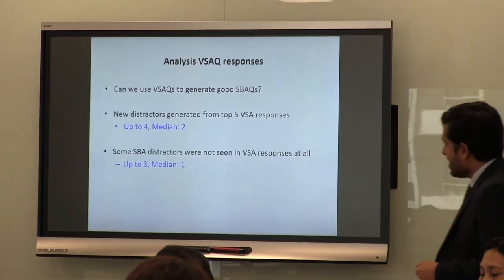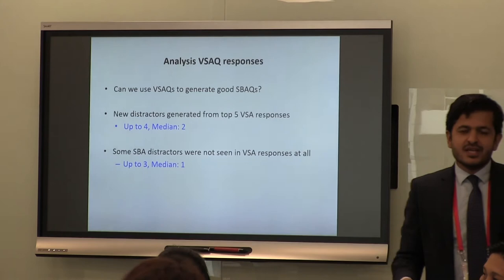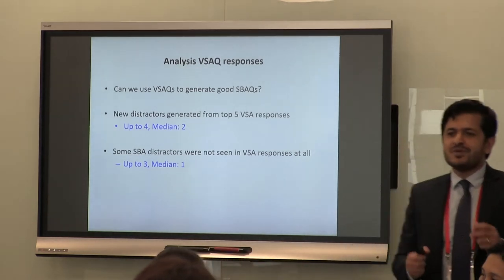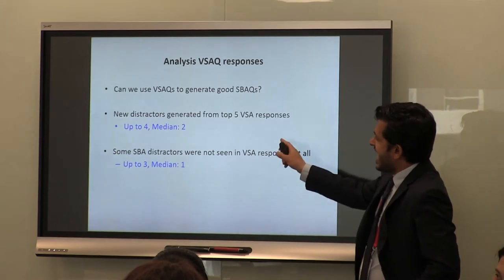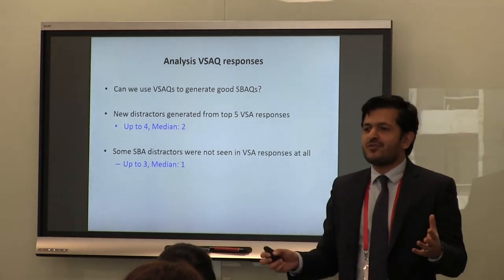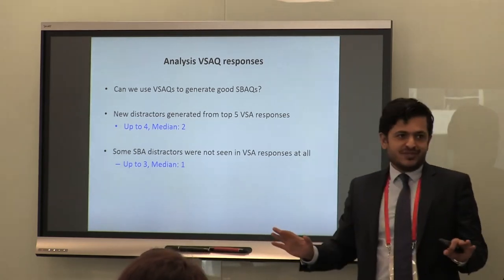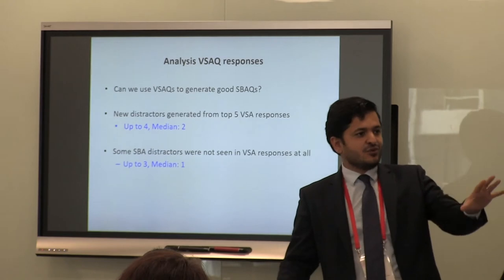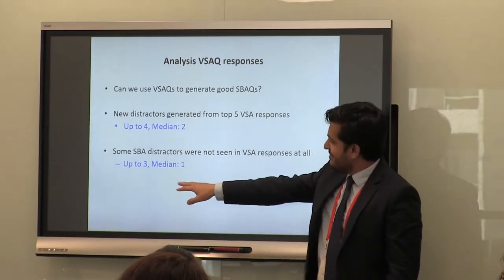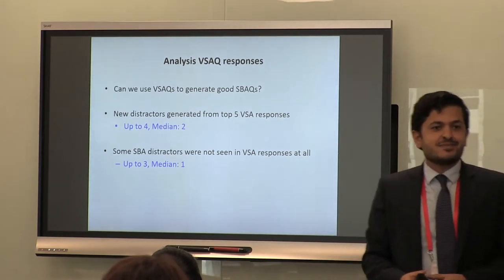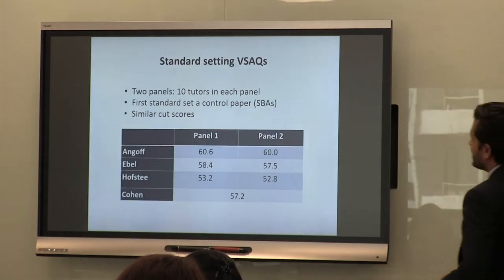An interesting additional finding: if you run questions as VSAs and see what people offer, you'll be amazed — you come up with distractors you didn't even think about. On average, students generated two distractors that weren't in the five options we thought people could give. Conversely, up to three distractors from the original SBA were never used. So if you're writing SBAs, run them as VSAs first to generate better, more realistic distractors for your SBA.